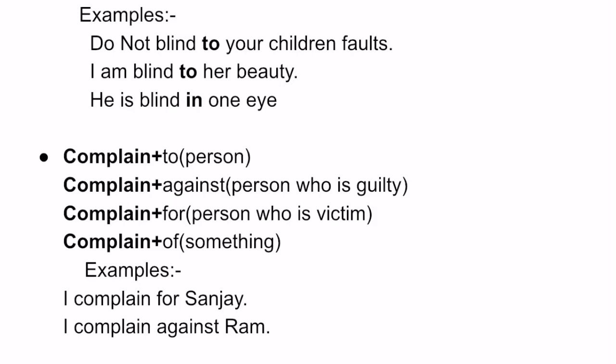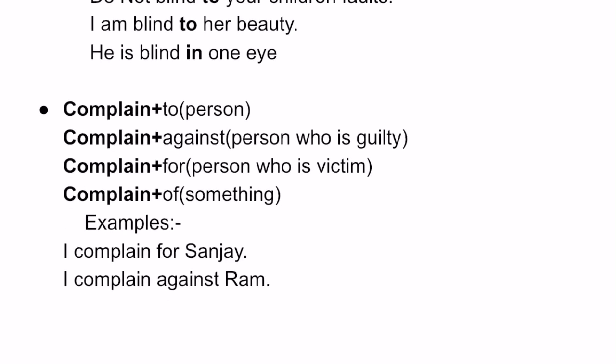'Complain for' means you are complaining on behalf of a person who is a victim. For example, suppose my sister was walking on the road and her gold chain was robbed. I would say: 'I complain for my sister to police against the thief.' 'For my sister' because she is the victim; 'to police' because I am going to them with the complaint; 'against the thief' because the thief is the guilty party. And 'complain of' basically comes before a non-living thing, a situation, or something being described.